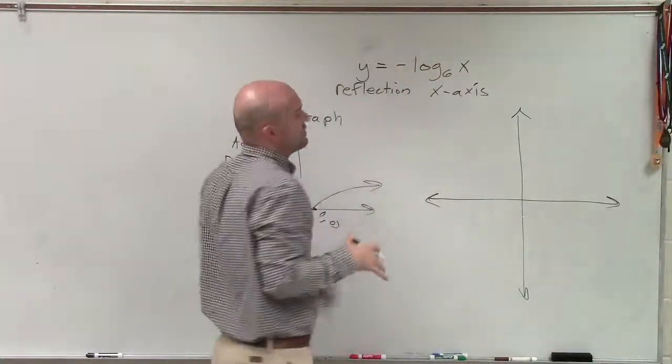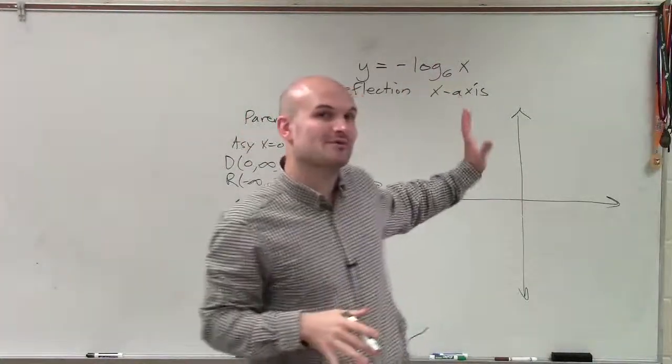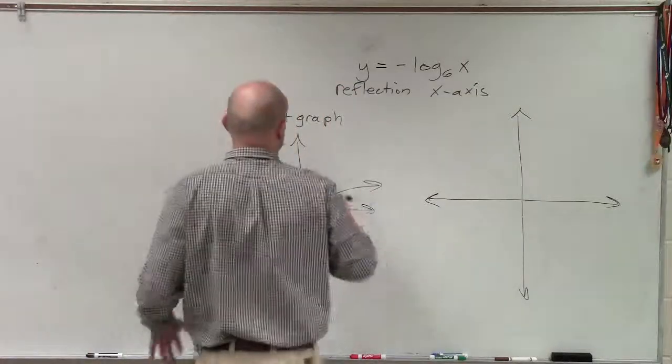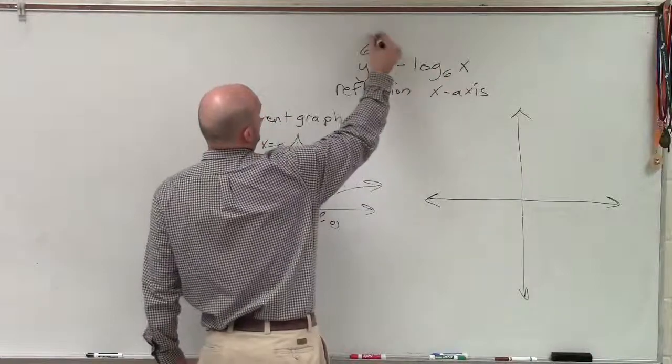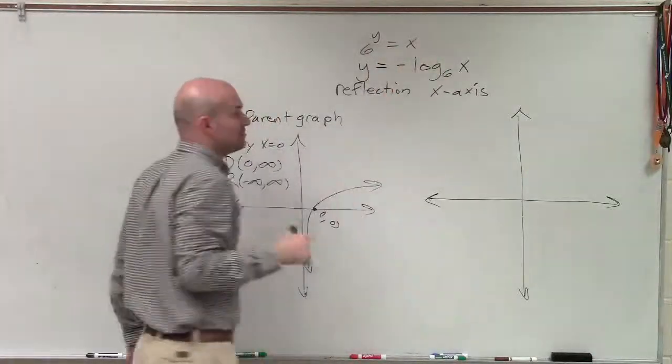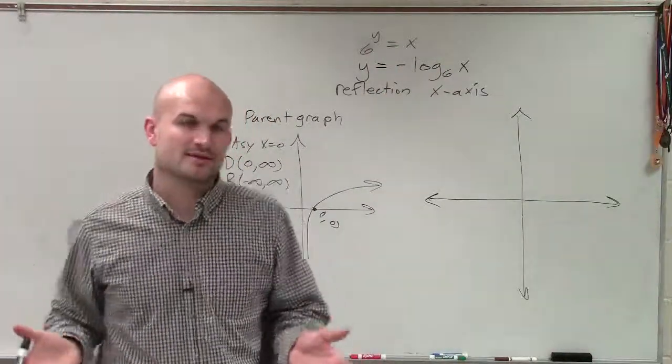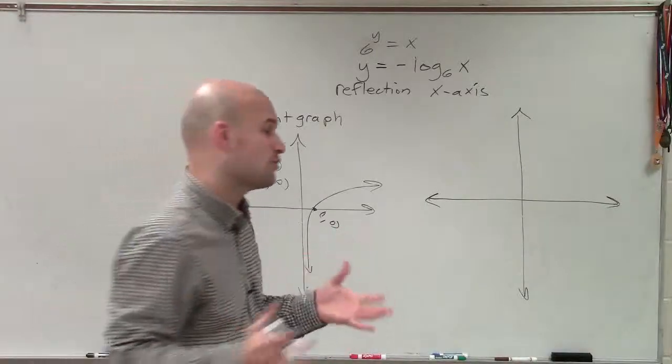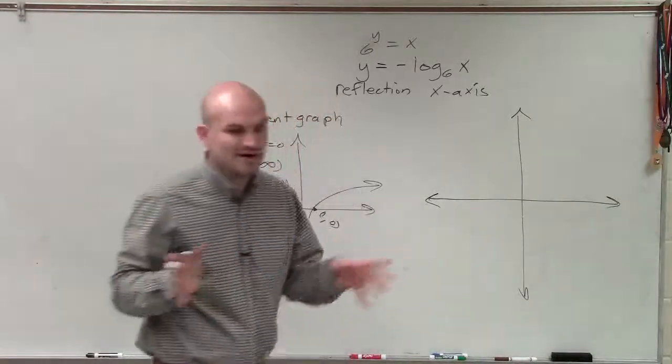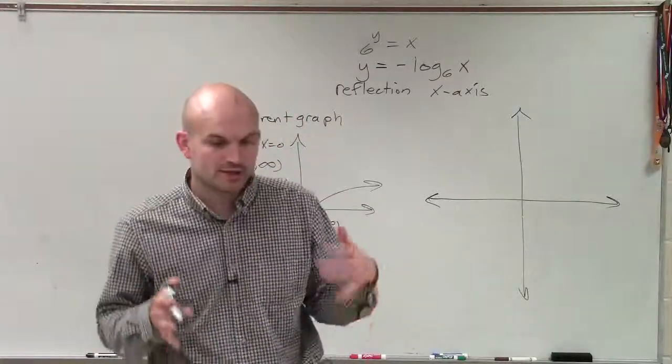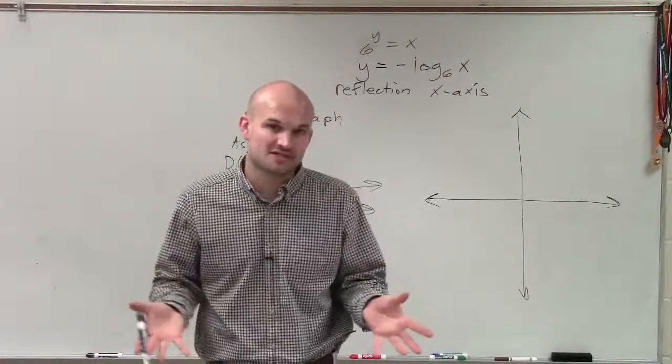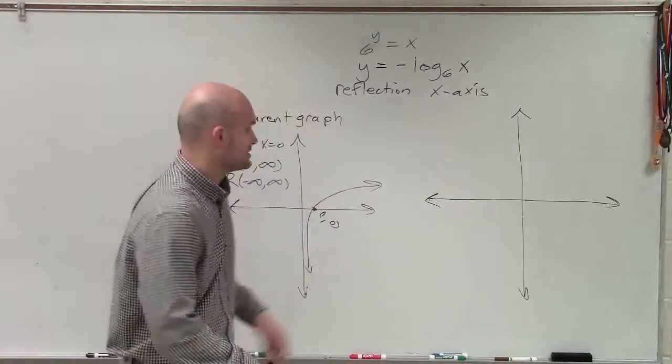And what I'm going to do is, without my transformation, so without that reflection, I'm going to rewrite it in exponential form. So therefore, it would be 6 to the y equals x. And I'll explain why I'm not going to deal with my reflection when I'm finding the coordinate points. Because what I want to do is, I want to find the parent graph, then I want to apply the transformations. So it's really important when you're graphing this to graph what the parent graph is going to be, and then apply the transformations.